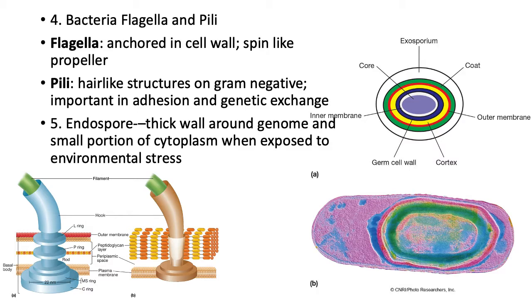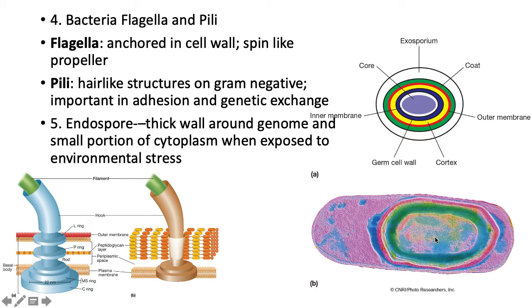Endospores are very thick coats - many walls surrounding the genome and a small portion of cytoplasm - that protect the bacterium. When an endospore forms, it could survive for thousands of years and become activated when conditions are right. Endospores are highly resistant to chemicals, radiation, dry conditions, and temperature extremes; if conditions are not right the bacteria forms an endospore and waits.